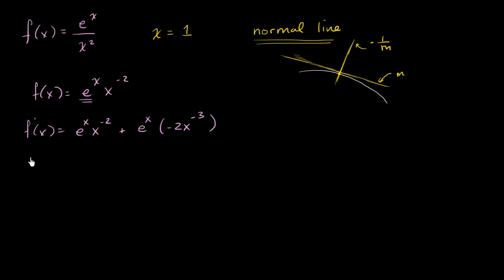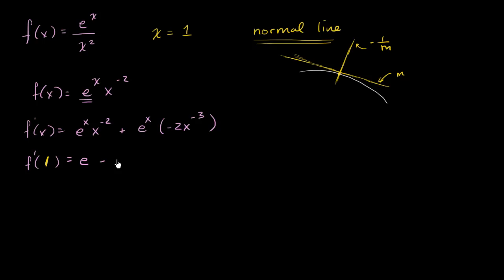So if I want to evaluate when x is equal to 1, this is going to be equal to e to the first power, which is just e, times 1 to the negative 2, which is just 1, plus e to the first power, which is just e, times negative 2 — since 1 to the negative 3 is just 1. So e plus negative 2e, which gives us e minus 2e, is just going to be equal to negative e.